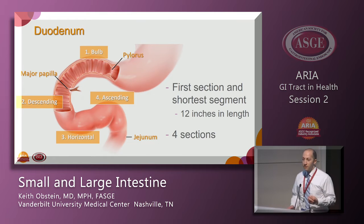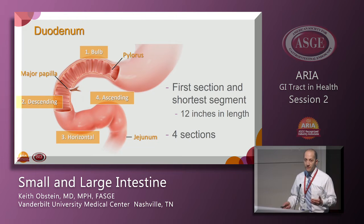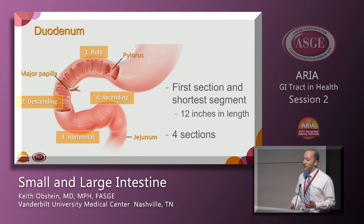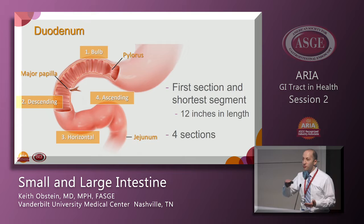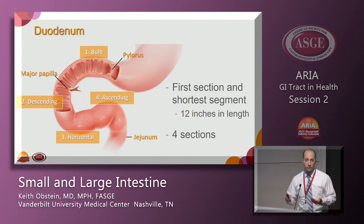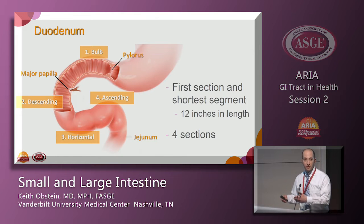The pylorus empties out from the stomach, and the duodenum is composed of four segments. During endoscopy, we'll comment on how far we can go with our endoscopes. The first part is the duodenal bulb, then coming around the duodenal sweep you get to the second portion of the duodenum, which is the typical location of the papilla — otherwise known as the ampulla. Then there's a horizontal third portion and an ascending fourth portion as you reach the ligament of Treitz, the transition point between duodenum and jejunum.